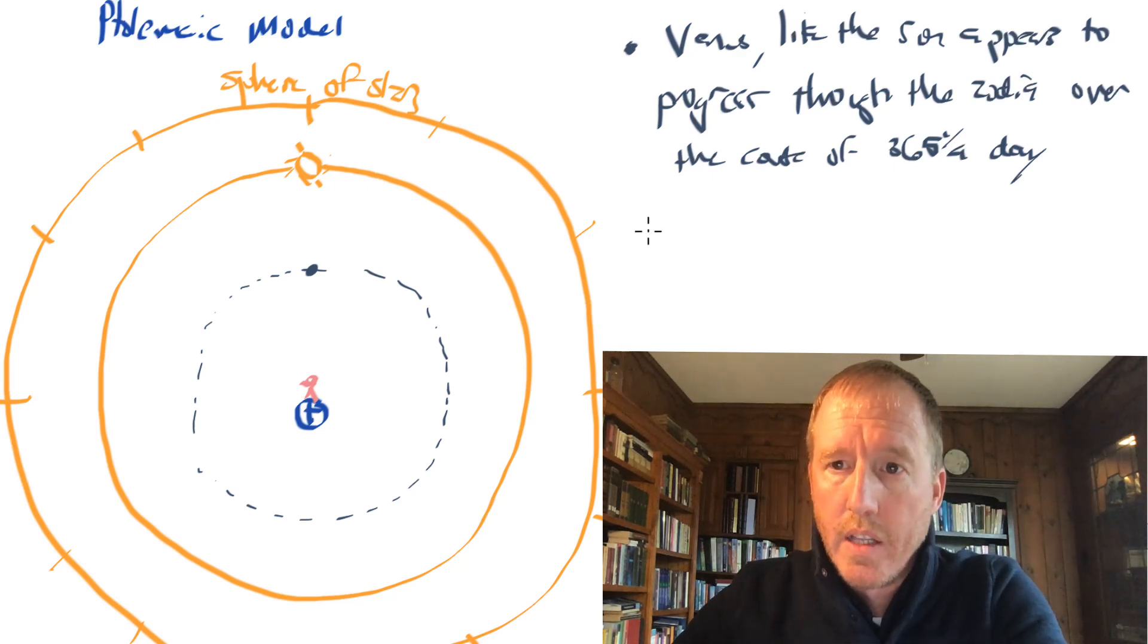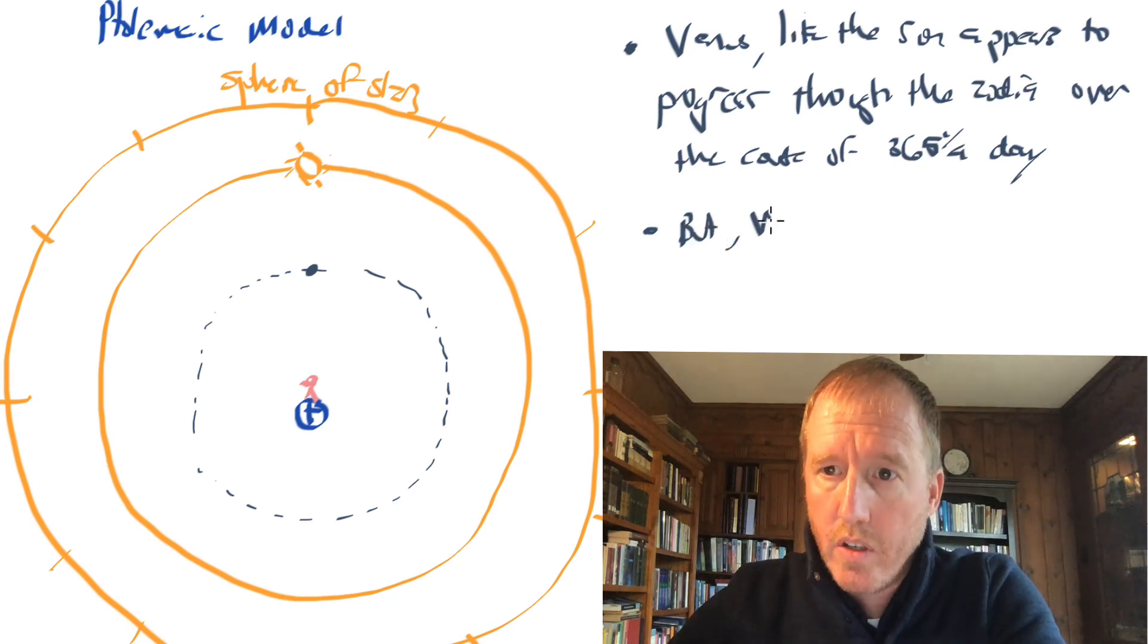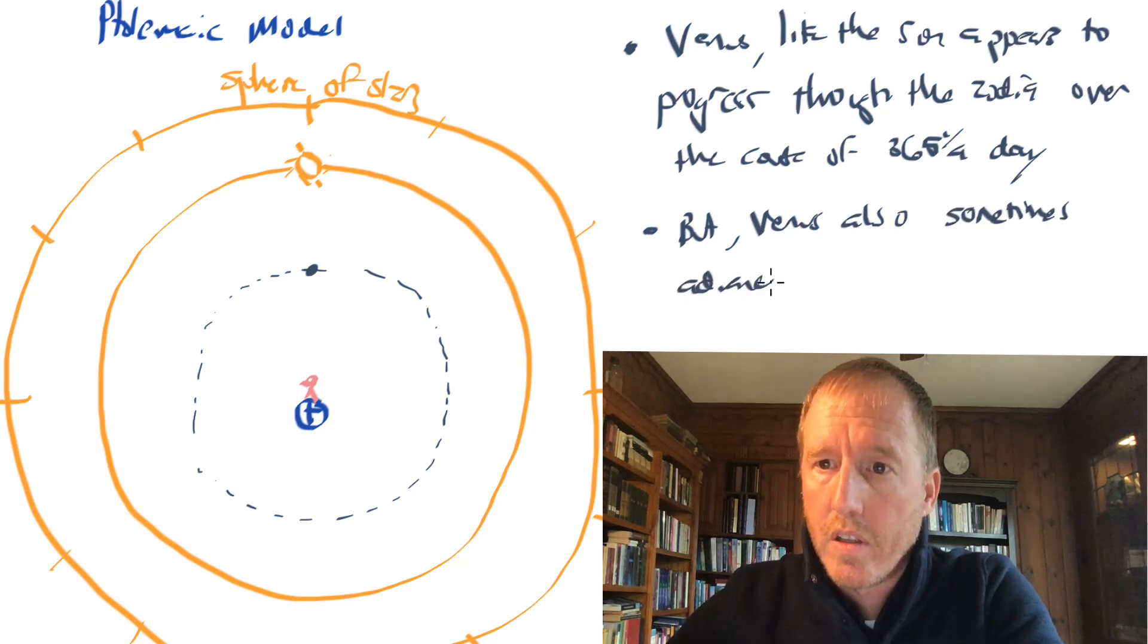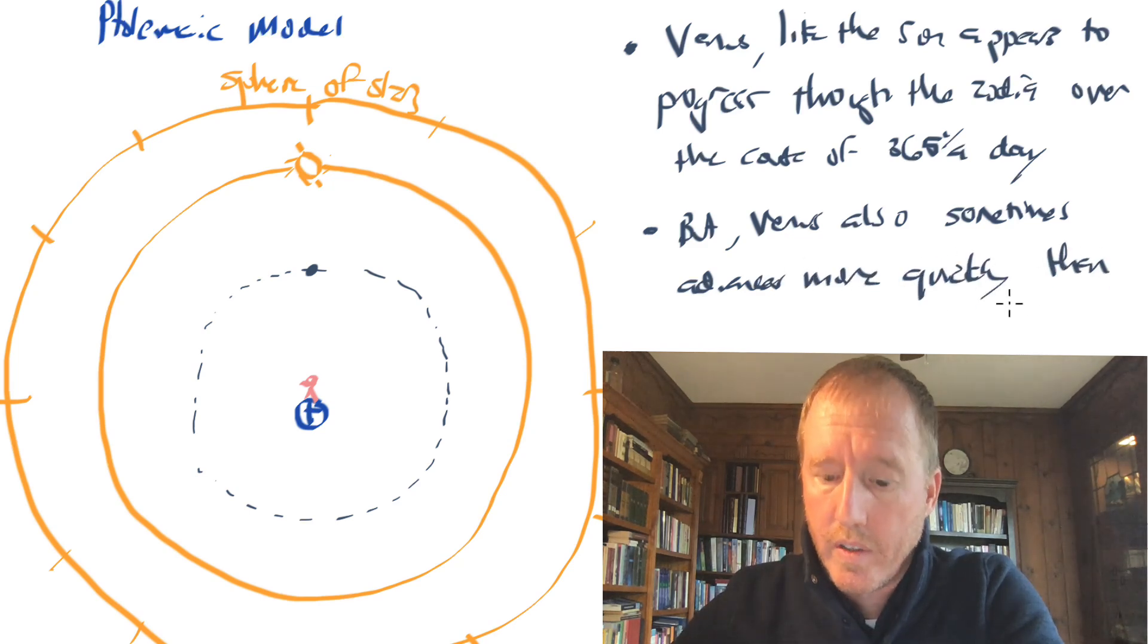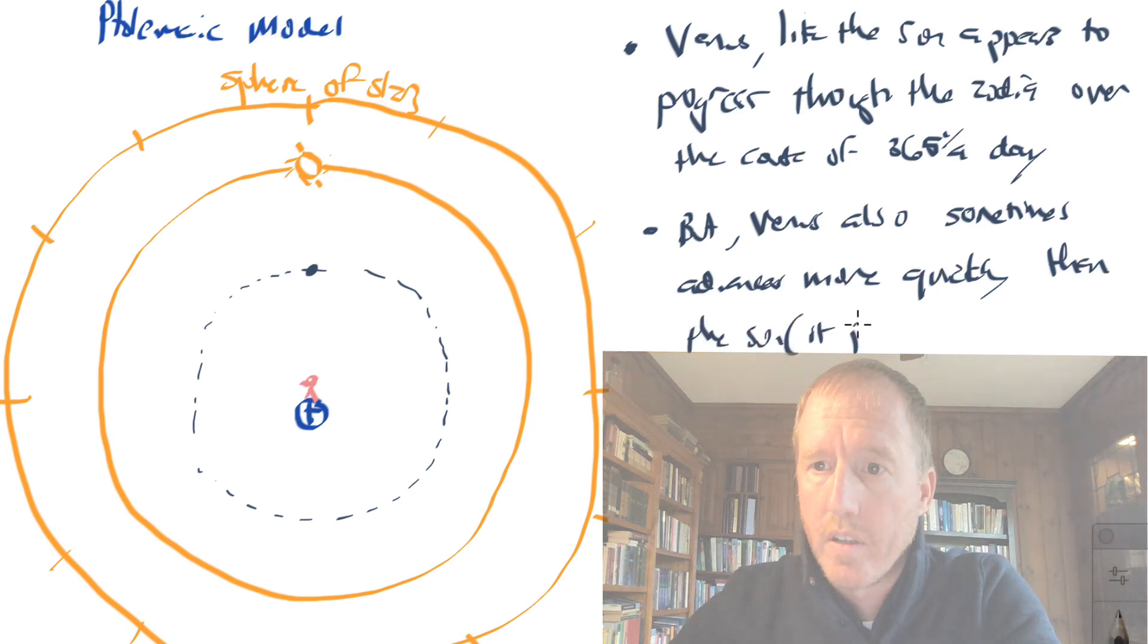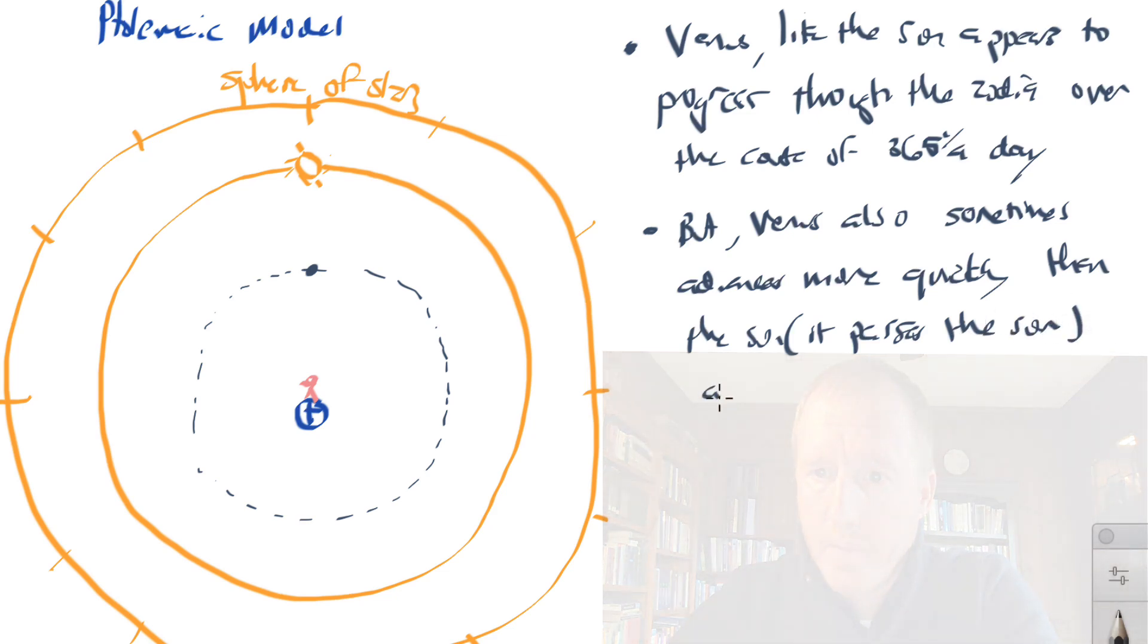So that's one point to keep in mind. The second point to keep in mind is that Venus also sometimes advances more quickly than the sun. In other words, it passes the sun. And other times, it falls behind the sun.